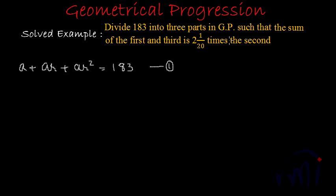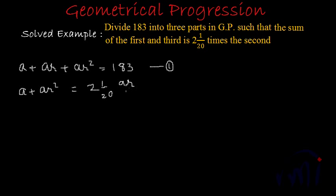The second part of the statement says that the sum of the first and third terms — that means a + ar² — is equal to 2 and 1/20 times the second term, which is ar. This gives us our second equation. Let's solve it further.